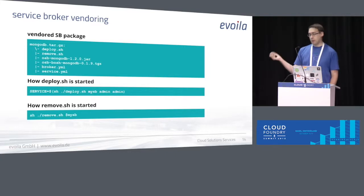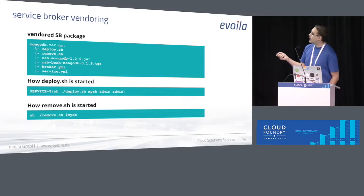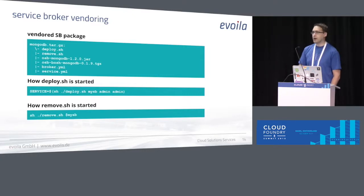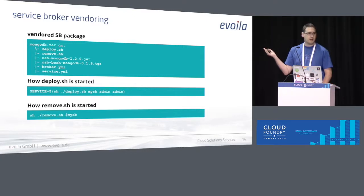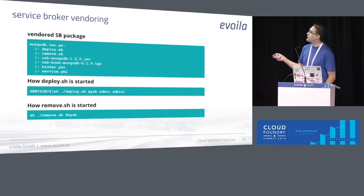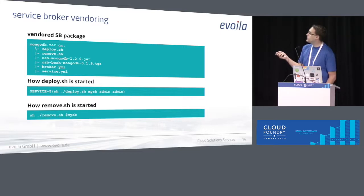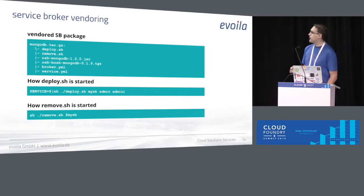So for example, with our MongoDB, I have a deploy script, a remove script, I have a JAR file which is the service broker. I have a BOSH release which then creates a MongoDB VM inside of Hyperkit. I have some config files I want to use for the deployment. And I deploy it with my service broker using admin/admin credentials, and later on I remove it that way.